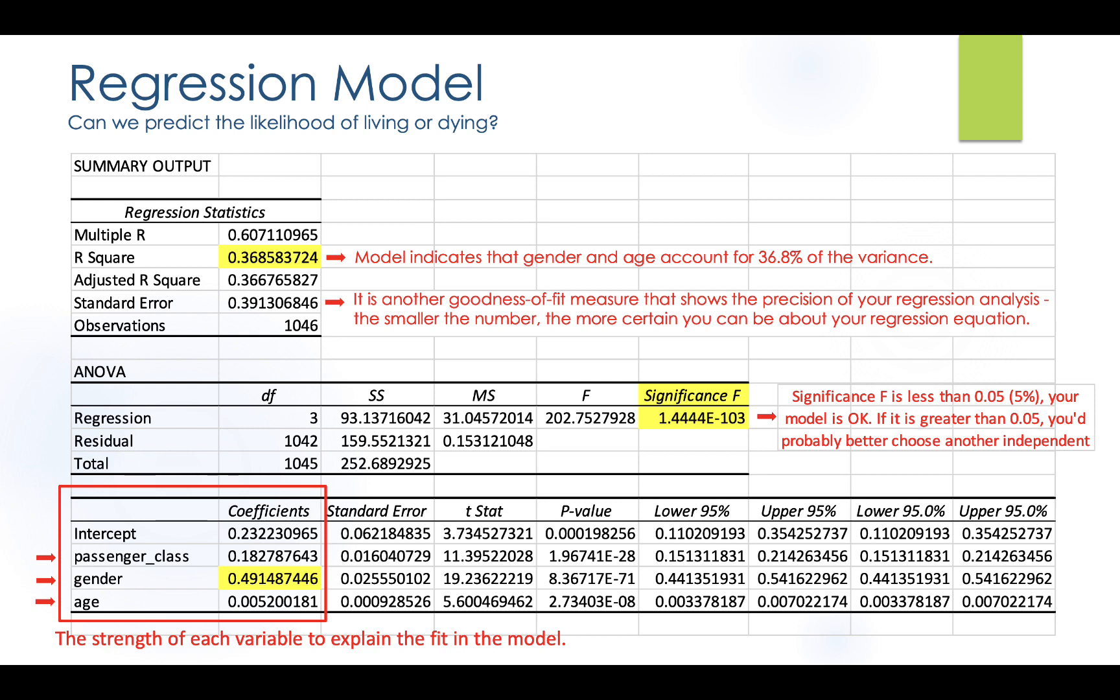All right. So here's the model that you should get once you run your regression. And we need to ask the question, can we predict the likelihood of dying with those three variables that we use? So the first thing, the output looks like this. So you're going to get a regression statistics box. It's going to be R square. And we're going to look at the standard error. So R square is the model indicates that gender and age account for 36.8% of the variance. So the closer we get to one here, the better our results are, better our predictions are. So you need to decide, is 36% good enough? And then the standard error. So another thing that we looked at to see if it's a good fit is that it shows the precision of your regression analysis. So the smaller the number, the more certain you can be about your regression equation. So the number isn't, it's not very small actually. So you might think that I'm hoping like a standard error would be like a 0.001 or something like that. So you need to kind of take that into consideration is how strong is the model.